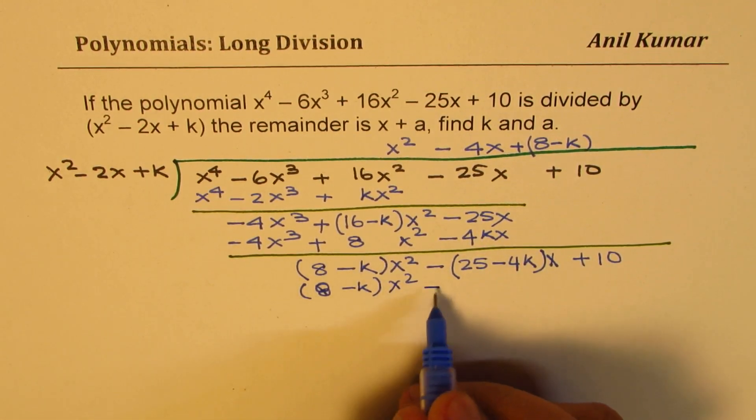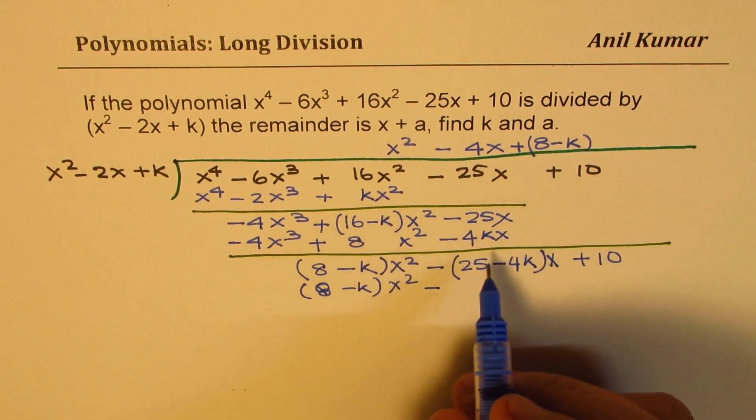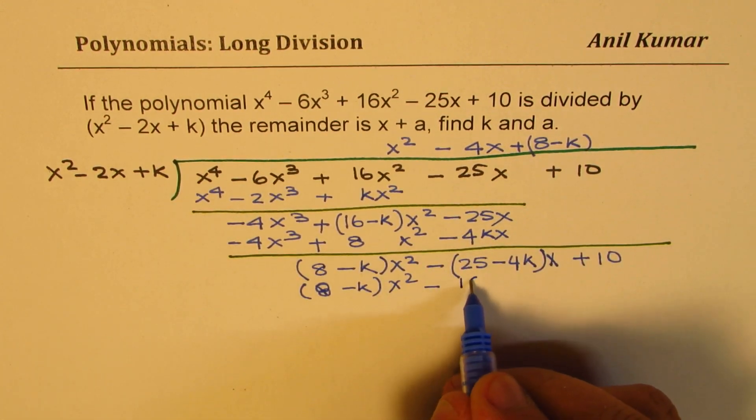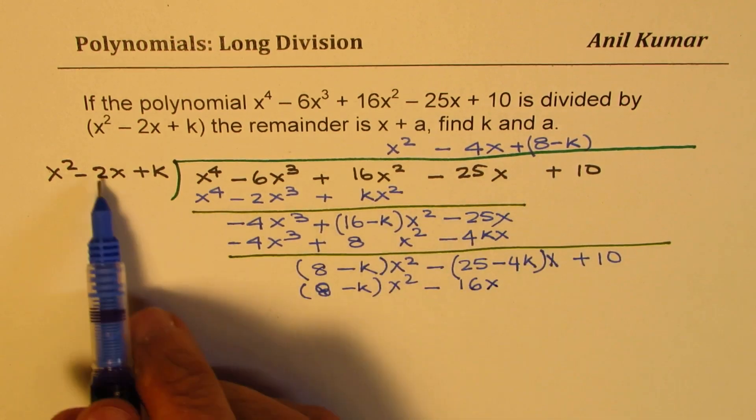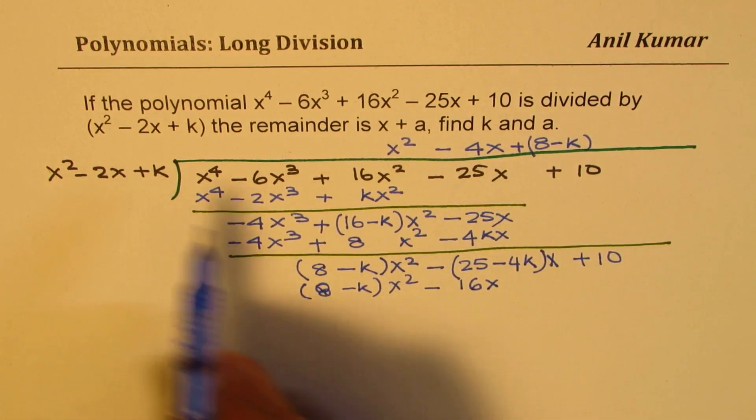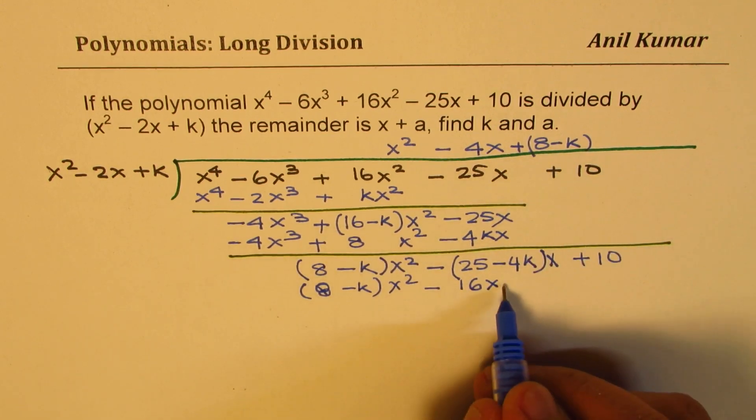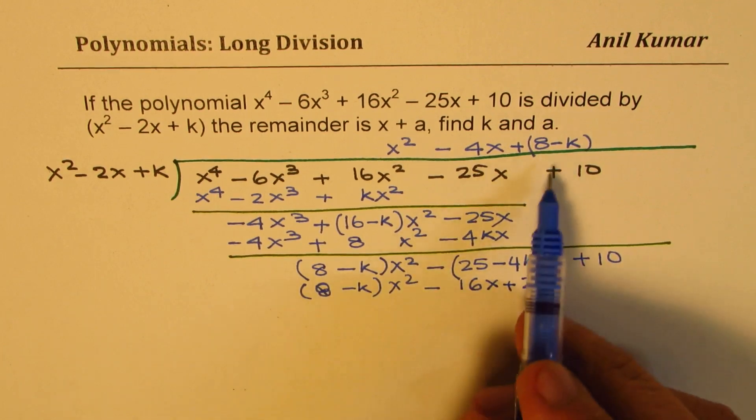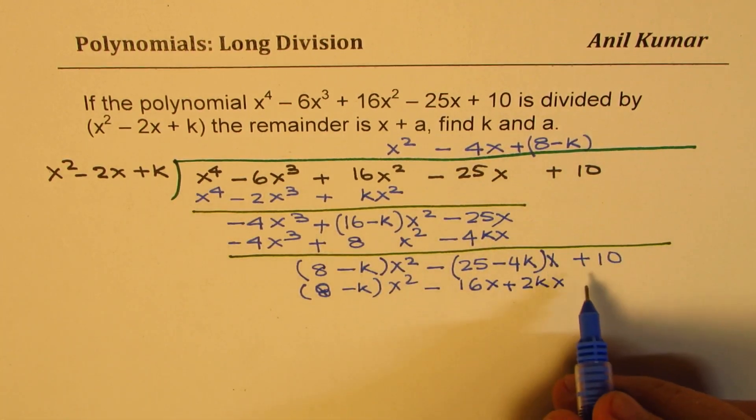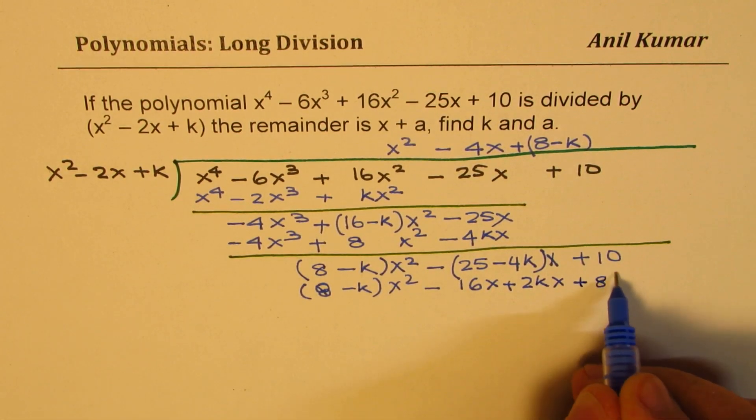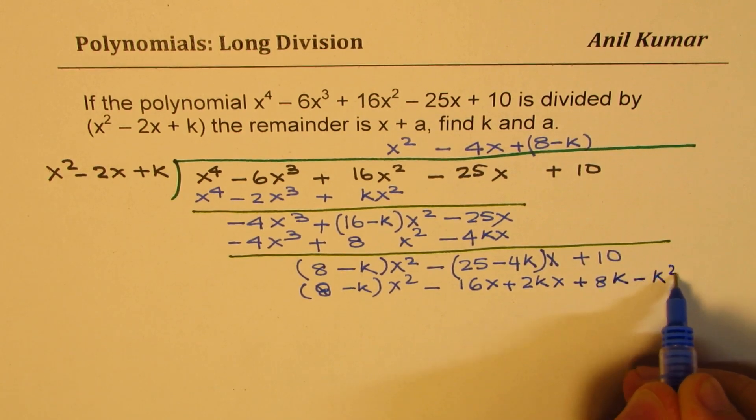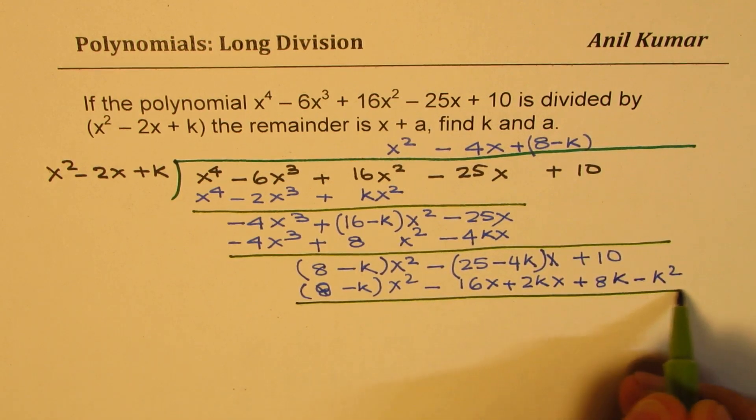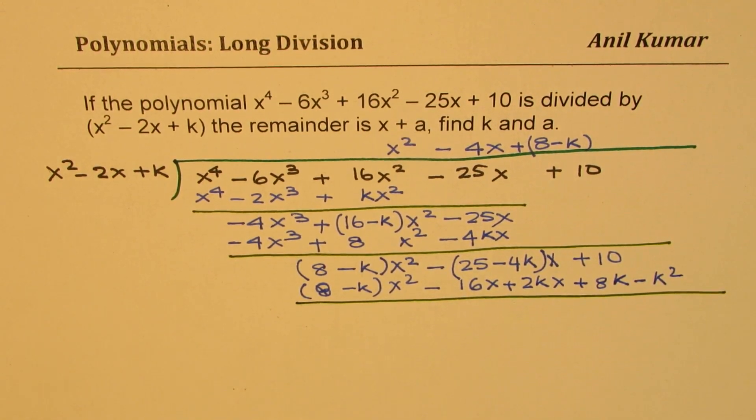And then we have -2 times 8. Let me write down separately. -2 times 8 is -16x. And then -2 times x with k will give us positive 2kx. And the constant term will be +8k - k^2. Is that clear?